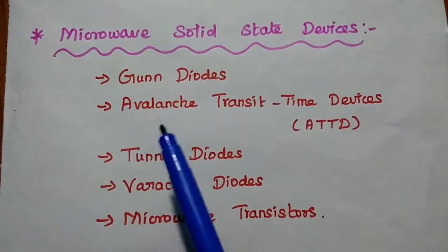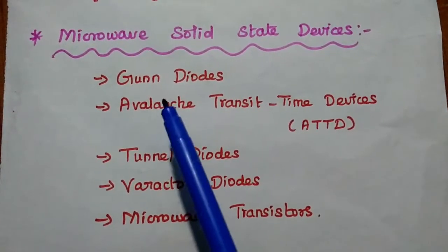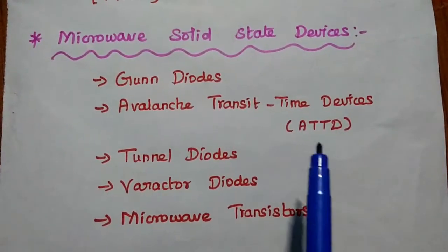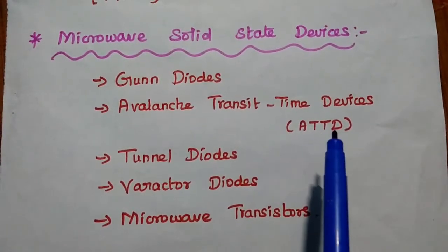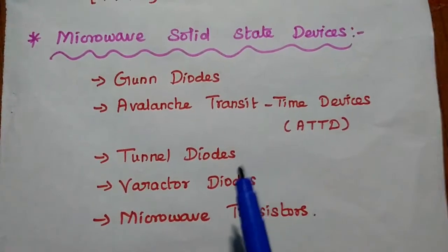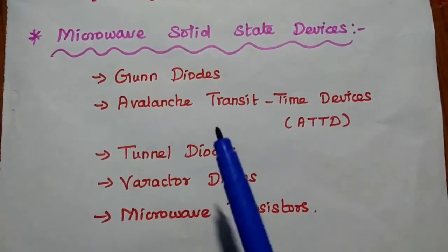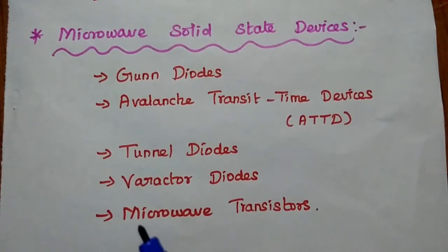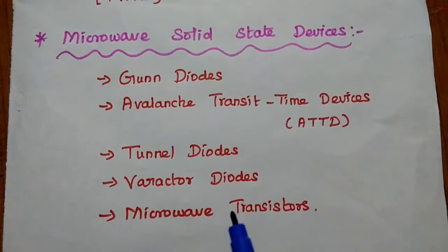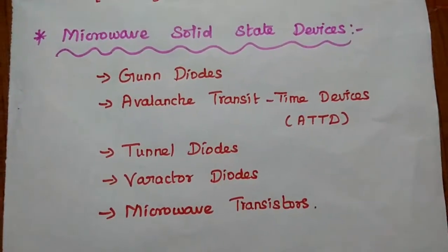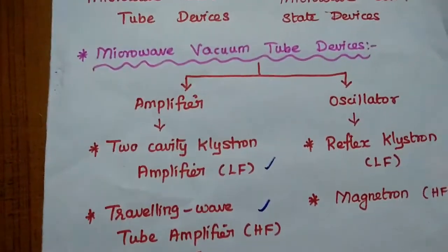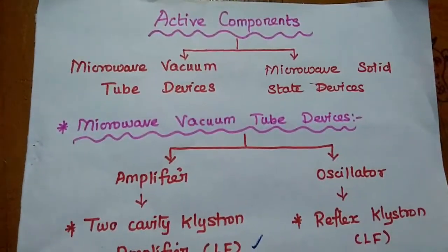Microwave solid state devices are diodes and transistors. Several microwave diodes are available — examples include Gunn diodes, avalanche transit time devices (ATTD), tunnel diodes, varactor diodes, and PIN diodes. There are also microwave transistors available. All these microwave components will be discussed in detail in further lecture videos.